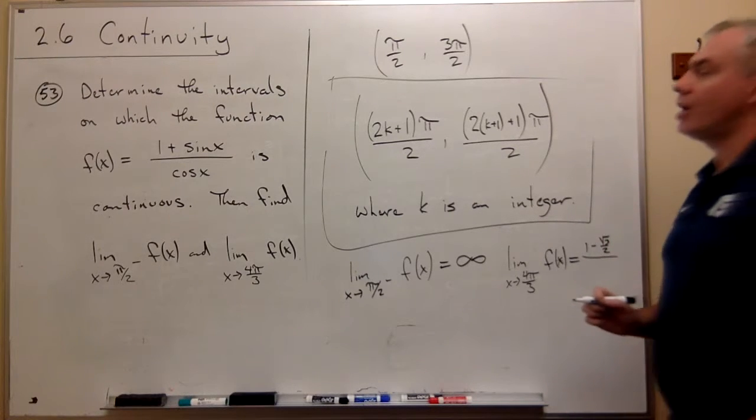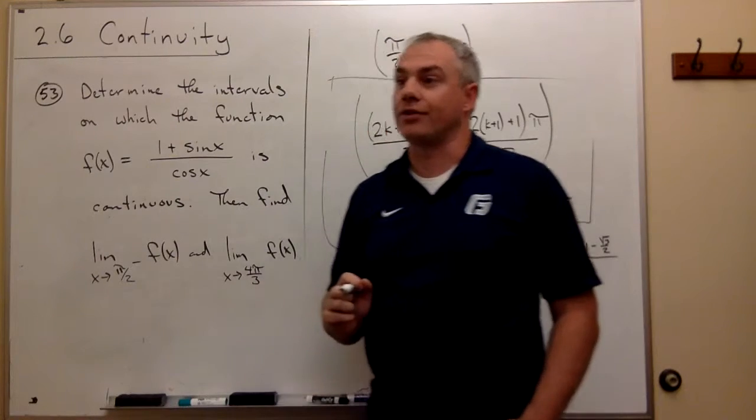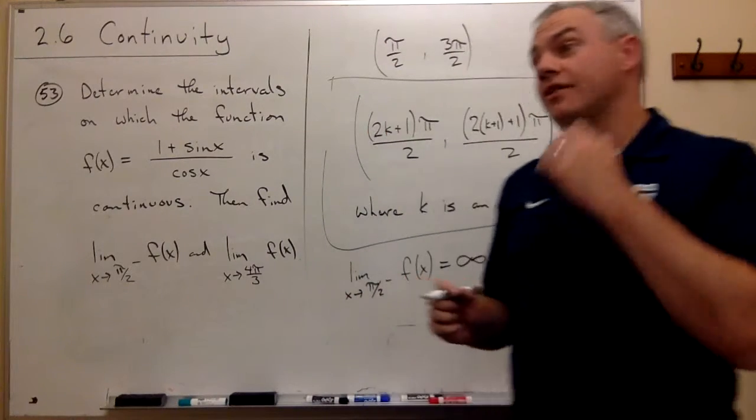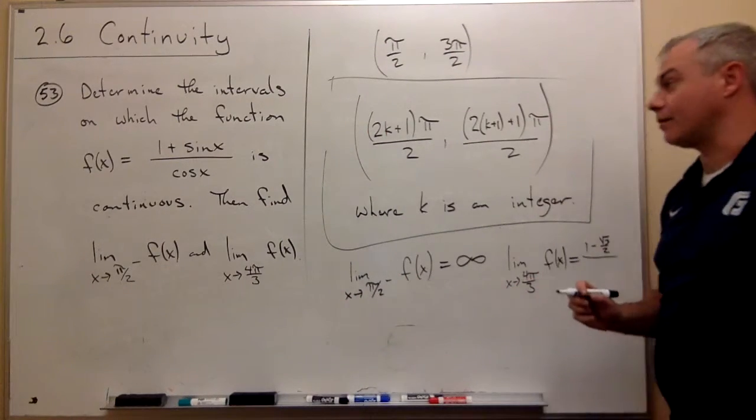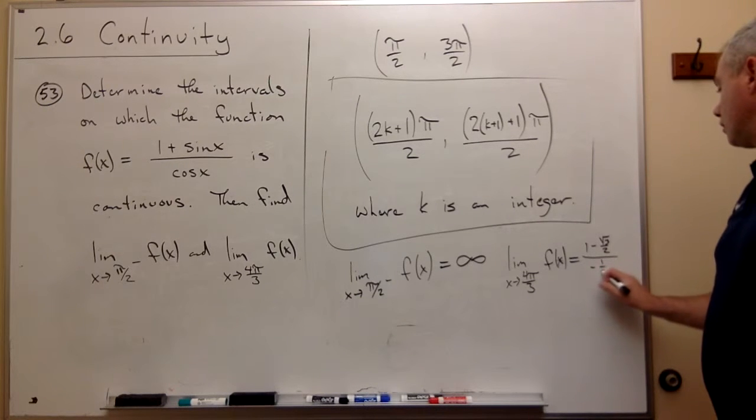And on the bottom I get cosine of 4 pi over 3. And cosine of 4 pi over 3, let's see, that would be negative 1 half.